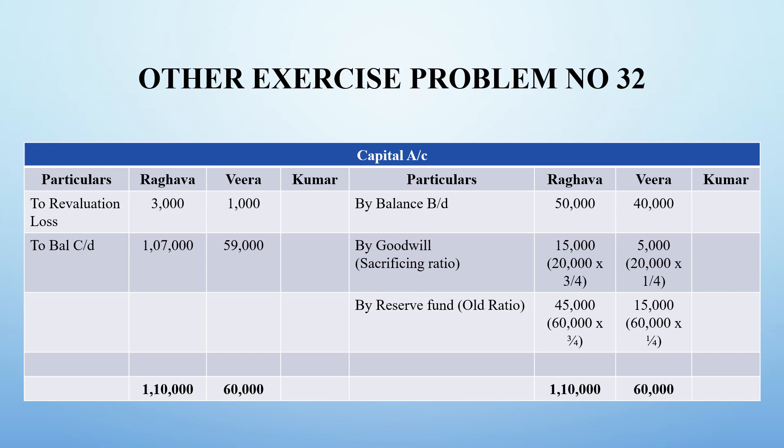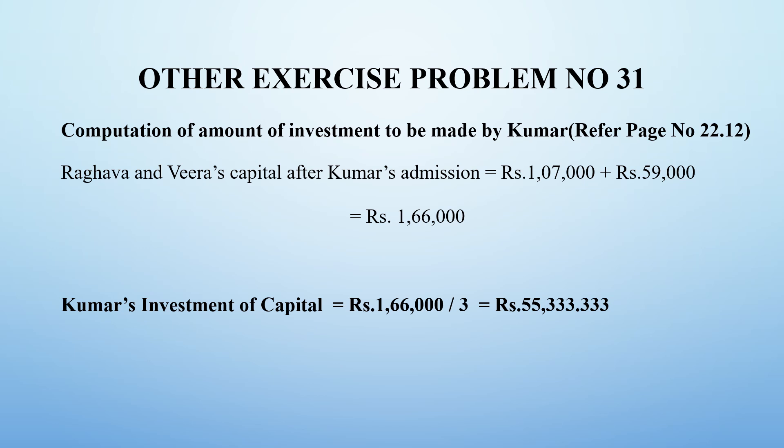We now work on a working note to calculate Kumar's capital. After Kumar's admission, Raghava and Veera's combined capital is 1,07,000 and 59,000, giving a total of 1,66,000. Since Kumar holds one-third of the total capital, we divide by 3 to get Kumar's capital: 1,66,000 divided by 3 equals rupees 55,333 and 33 paise. This is Kumar's capital value.